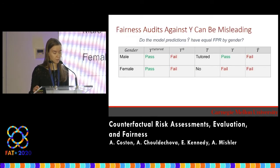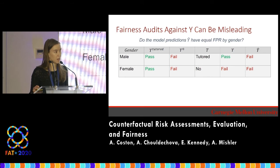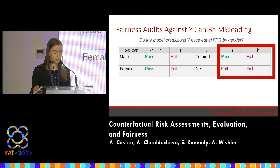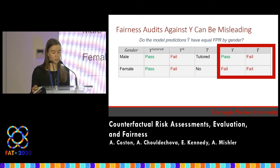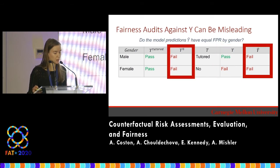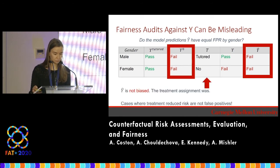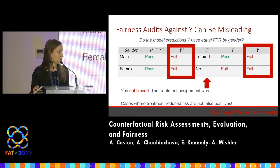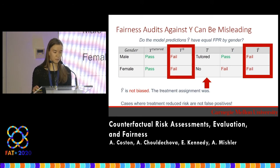This is also important for fairness audits. If the fairness auditing question is whether the model predictions Y-hat have equal false positive rate by gender, then the answer depends on whether we evaluate against Y or Y0. The common approach of evaluating against Y would suggest that the false positive rates are different by gender, but against the outcome we actually want to predict, we see that they are not different. So the model here is actually not biased, but the observational audit suggested that it was because it incorrectly considered cases where treatment reduced risk as false positives. In fact, the treatment assignment was unfair because both the male and female student were at risk, but only the male student got the extra resources — this was the source of bias that the observational audit wrongly attributed to the model.